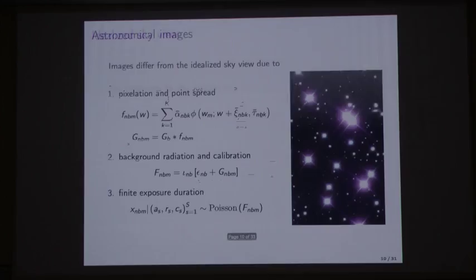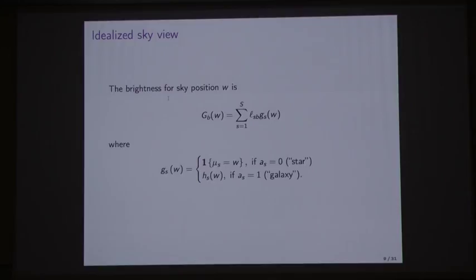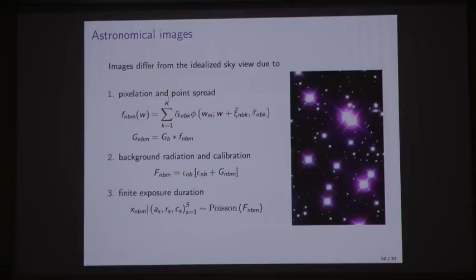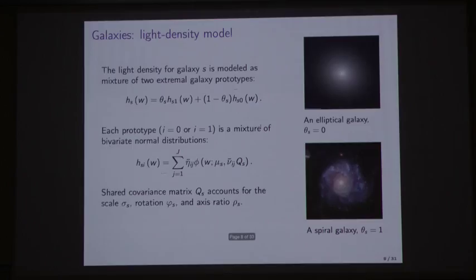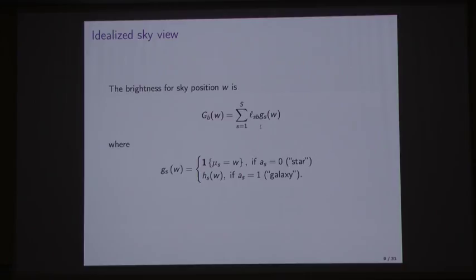With what we've described so far, we can put together what I call the idealized sky view, which is what the sky would look like if it weren't for the effects of pixelation, radiation, and finite exposure duration. In this model, the sky is obtained by summing over the different sources, and each source has a brightness L_SB in a particular band. It also has spatial characteristics G_S. For stars, the spatial characteristic is just a point source, denoted with an indicator function. For galaxies, it's denoted H_S, which is the interpolation between the two prototypical galaxies.